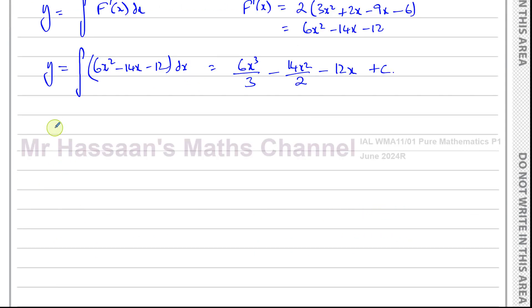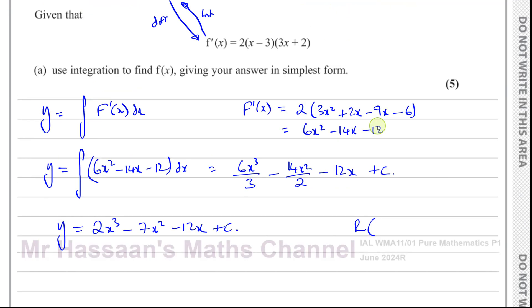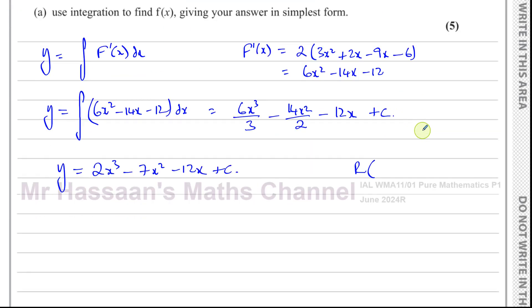That gives us the integral. We have to find what c is. So far we have y equals 2x³ minus 7x² minus 12x plus c. We need to find what c is. We know that the curve passes through the point R which is (4, 13). So we can use this point to find the value of c. We can replace the y with 13 and the x with 4.